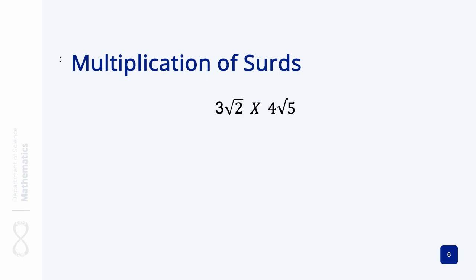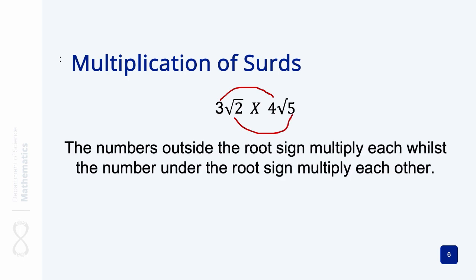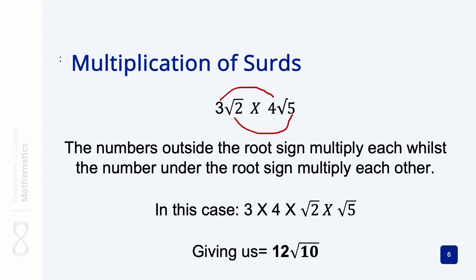In principle, the numbers outside the square root signs multiply each other, so three multiplies four, and the two multiplies the five. The most simplified way of putting it: three by four, multiplied by the root of two by the root of five. This gives us 12, since three times four equals 12, and the numbers inside the roots — two and five — multiply each other to give us the root of 10.